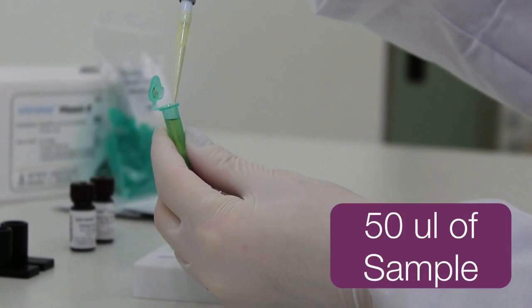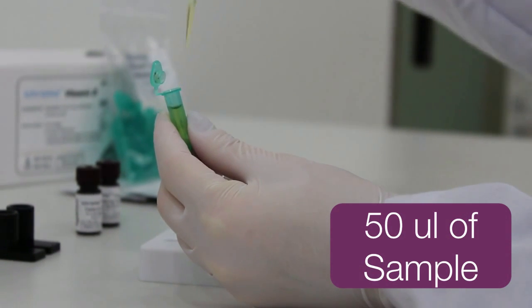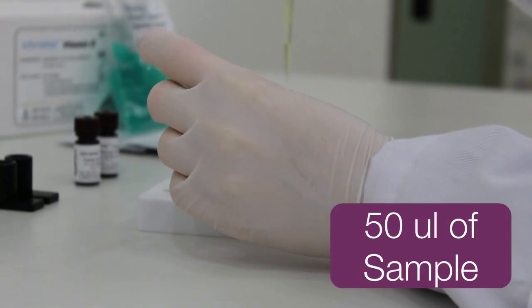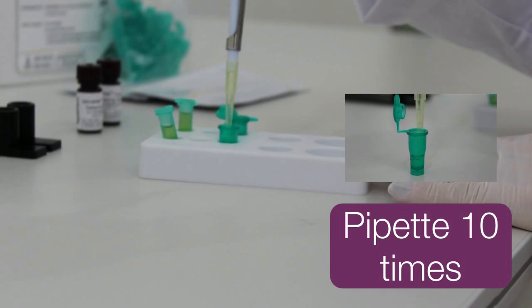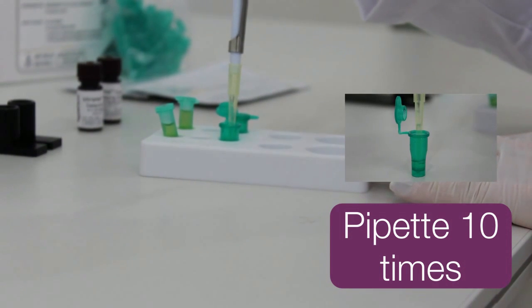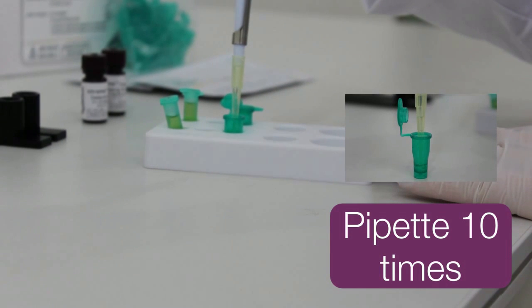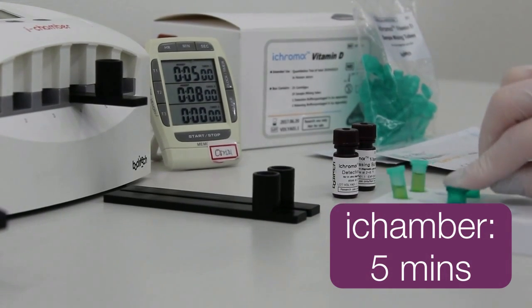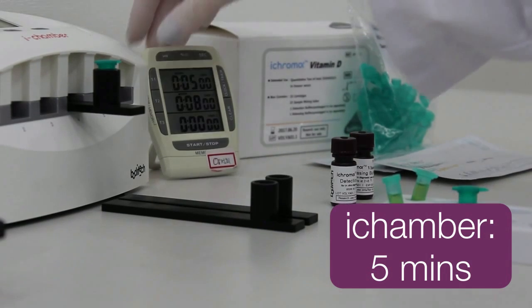Transfer 50 microliters of the sample using a new tip to the sample mixing tube containing releasing buffer and mix well by pipetting 10 times. Leave the sample loaded tube in the incubating tube block at 35 degrees Celsius for 5 minutes.